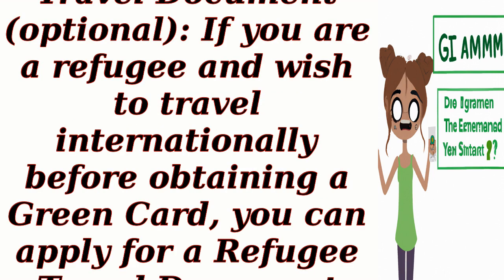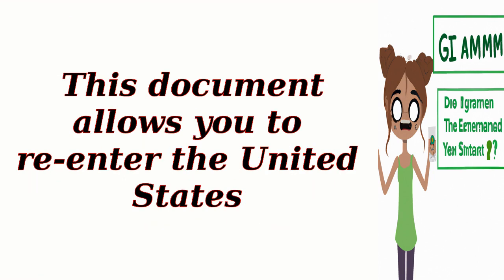Apply for a refugee travel document (optional). If you are a refugee and wish to travel internationally before obtaining a green card, you can apply for a refugee travel document from the USCIS. This document allows you to re-enter the United States.